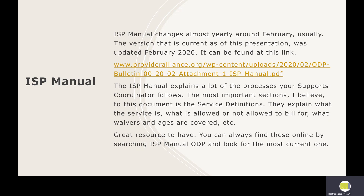You can read about services in detail and be more informed about what you're asking for and what fits your needs best. You can also learn about services that you may not be told about. Support coordinators understand what you're looking for and suggest services, but this way you can look through services and maybe find that some things fit an area you didn't really consider. You can always find these online by searching ODP ISP manual, and then check to make sure you have the most current one.